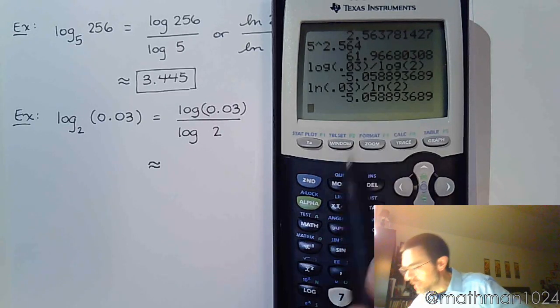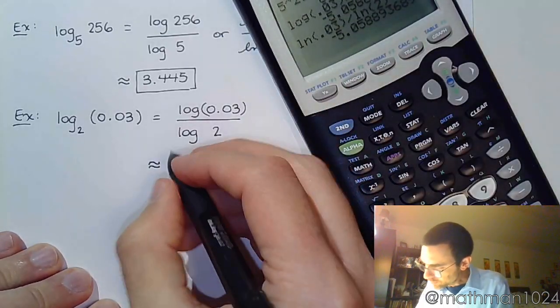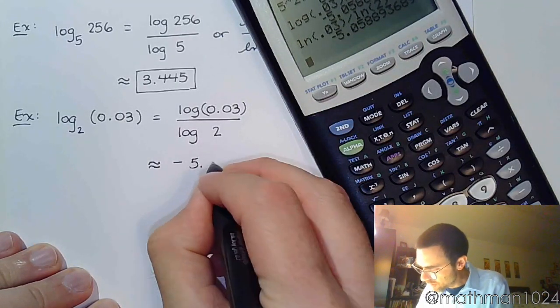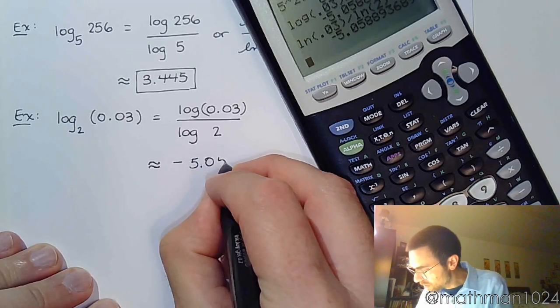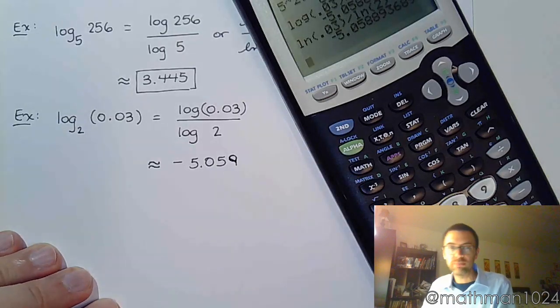Round to the nearest thousandth. So that's 0.05, that's 8. But the 8 is bigger than 5, so I need to round up. So I get negative 5.059. Like that.